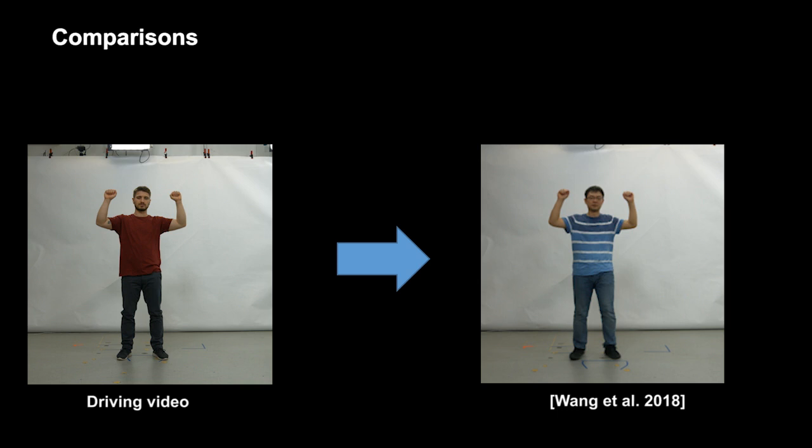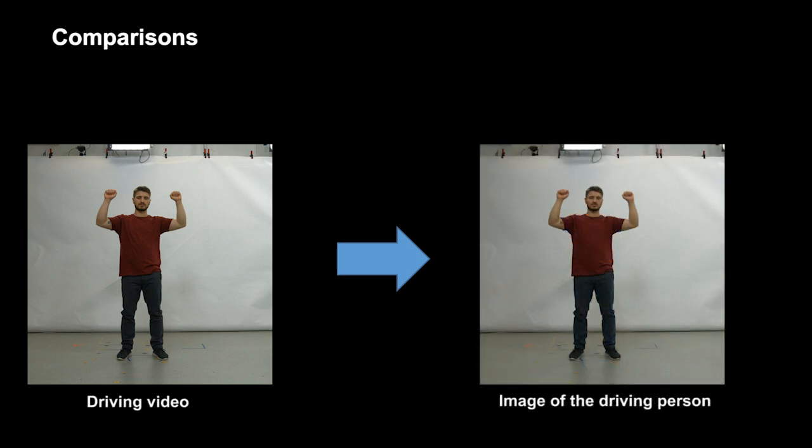In contrast, many other methods, like Wang et al, only transfer the appearance, but incorrectly scale the person to match the driving actor's shape.